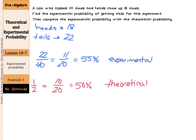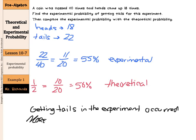Now, what does this mean in comparing the experimental probability with the theoretical probability? We should, in theory, be getting tails 50% of the time. But in our experiment, it occurred 55% of the time. So what we can conclude is getting tails in the experiment occurred more often than expected.